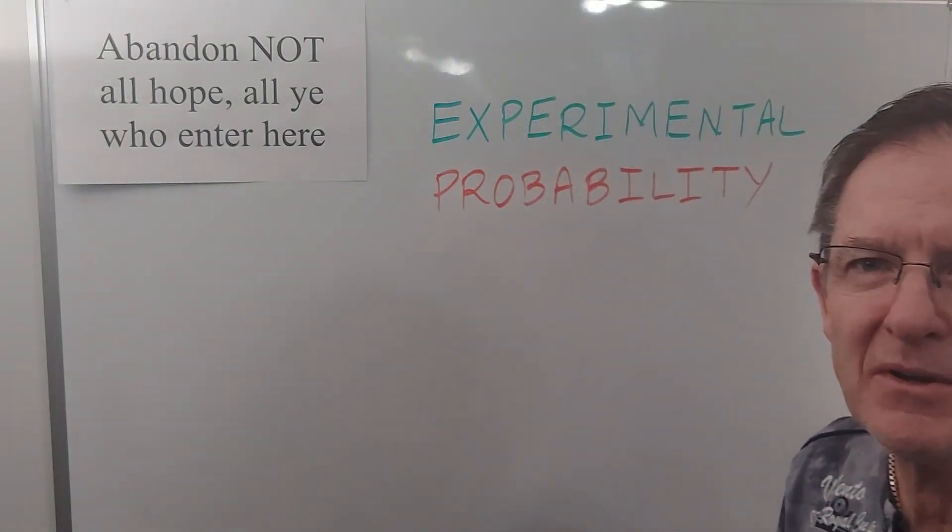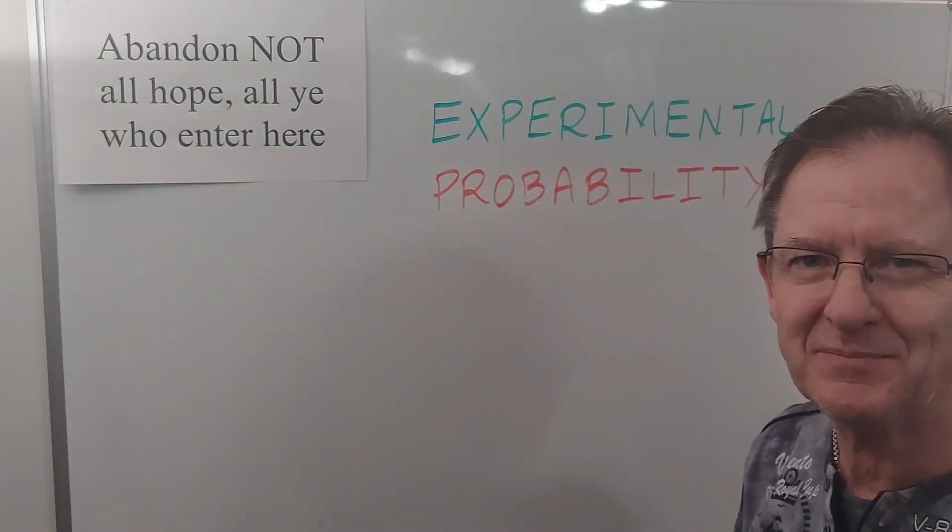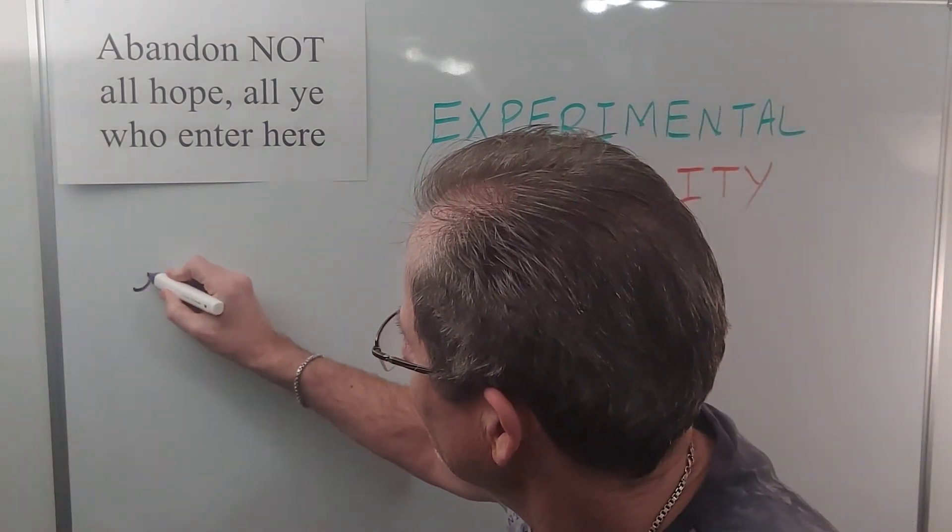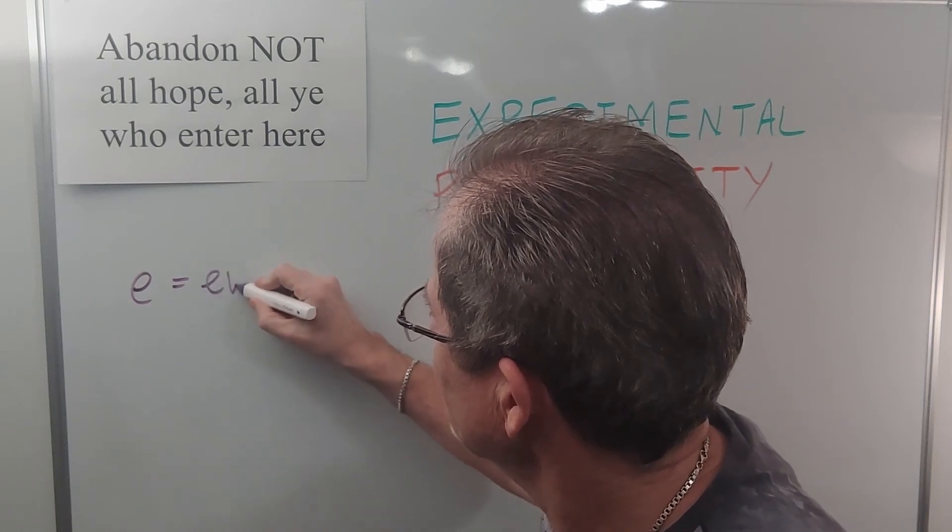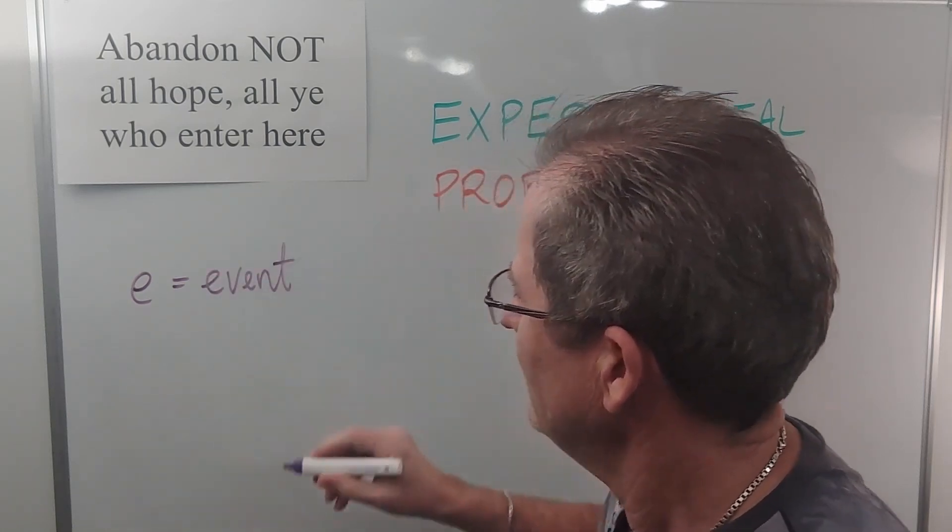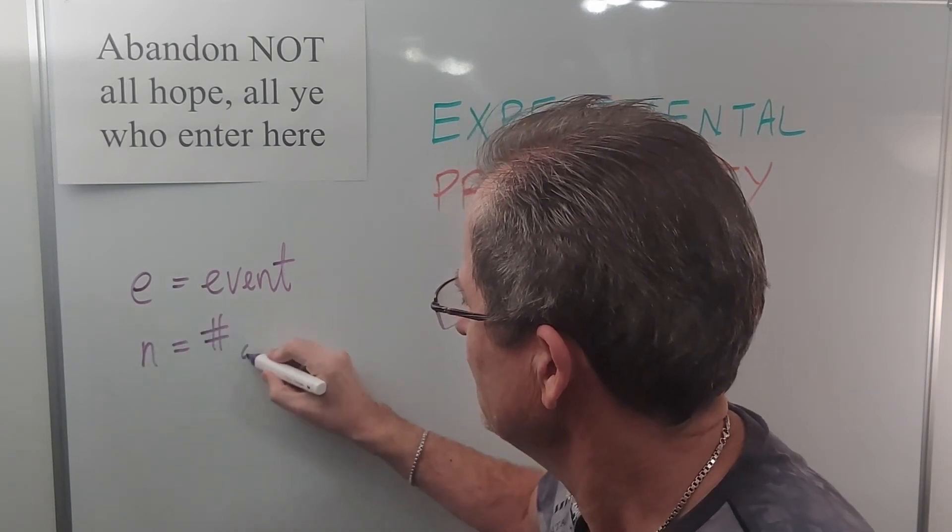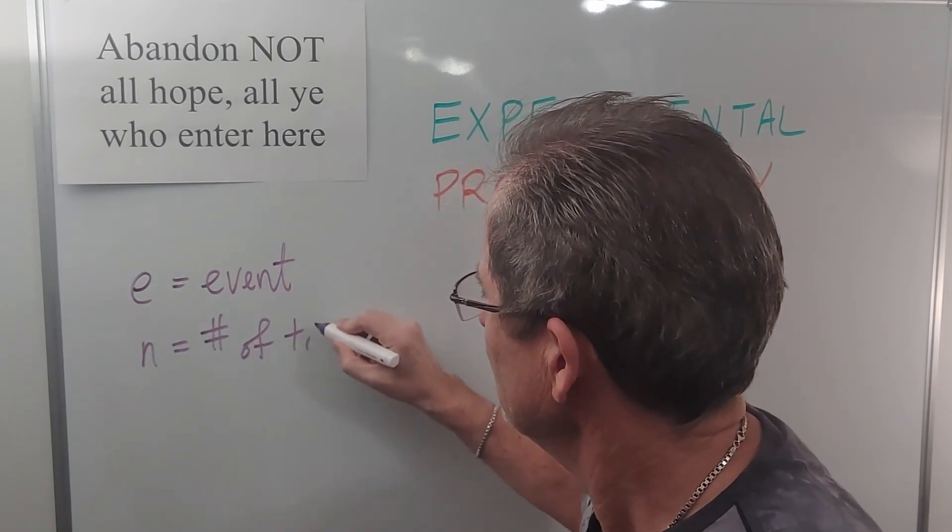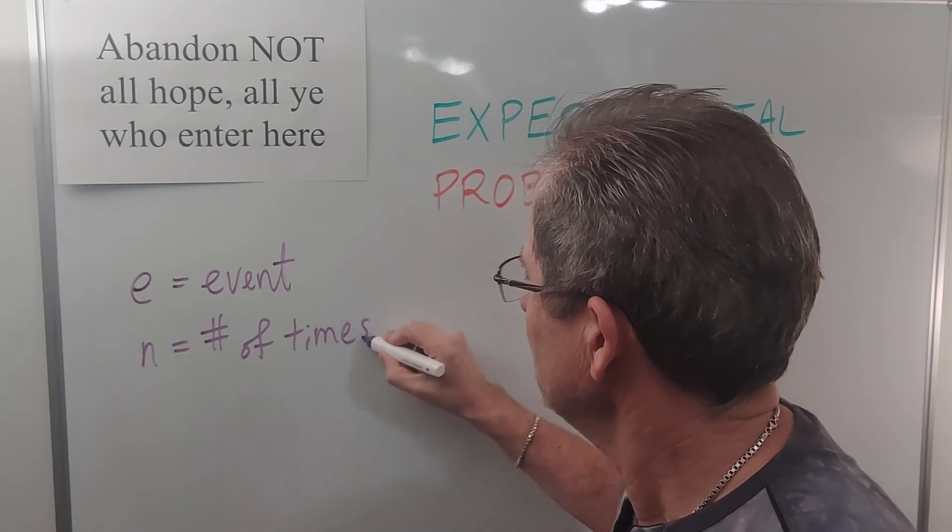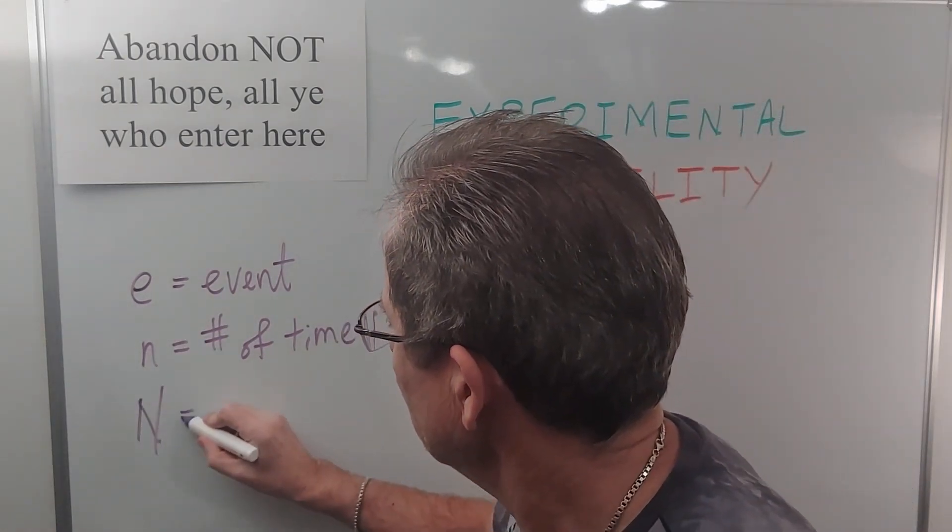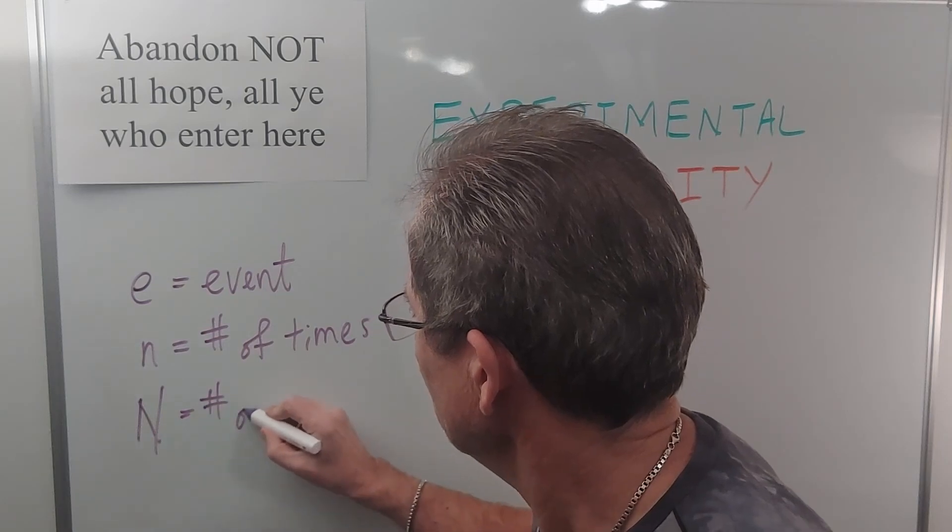Okay let's talk about experimental probability. Let's say that E represents a certain event and that n is the number of times that it occurred out of so many trials and capital N is the number of trials.